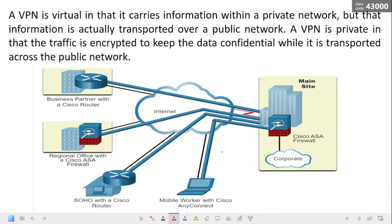A Cisco Adaptive Security Appliance firewall helps organizations provide secure, high-performance connectivity including VPNs and always-on access for remote branches and mobile users. The SOHO, or Small Office Home Office, is where a VPN-enabled router can provide VPN connectivity back to the corporate main site. Cisco AnyConnect is software that remote workers can use to establish a client-based VPN connection with the main site.